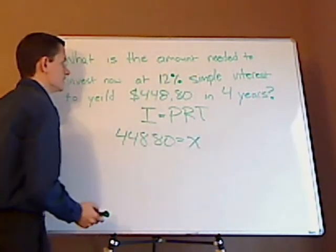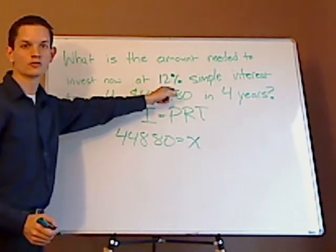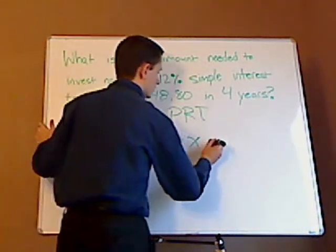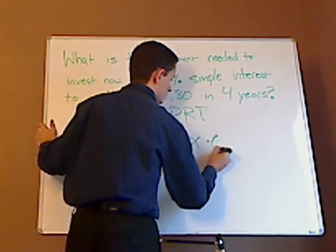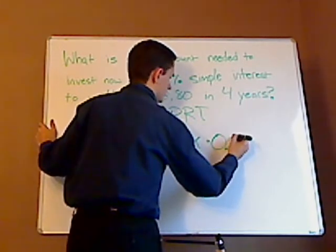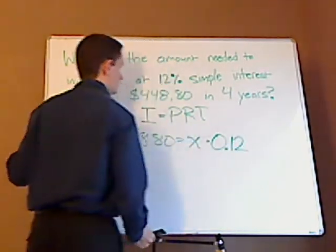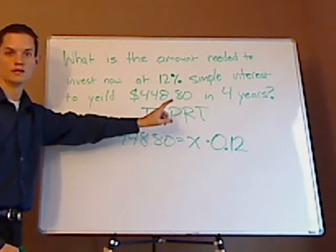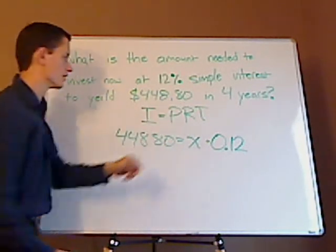Now, your rate is given. Your rate is 12%, but you have to change that to a decimal. So that would be 0.12, 12 hundredths, times time, which is the four years.